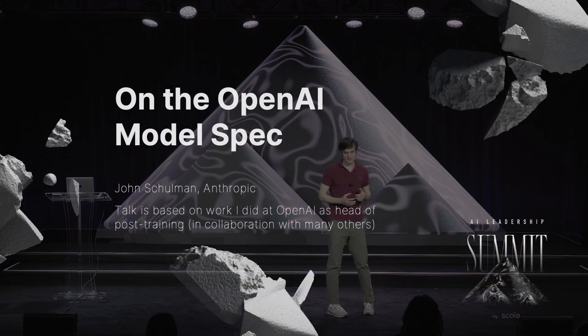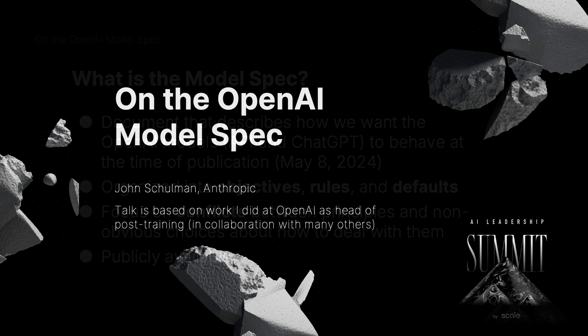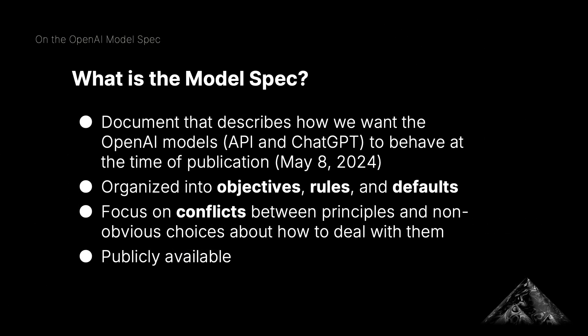I'm going to talk about some work I did earlier this year at OpenAI, in collaboration with many other people at OpenAI, on the model spec. The model spec is a document that describes how we want the models that we release to behave — at the time of publication, which was May this year. A model like ChatGPT is an extremely complicated product with an enormous surface area of different kinds of inputs it has to deal with.